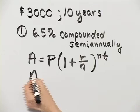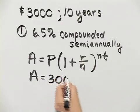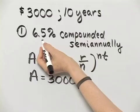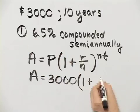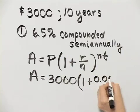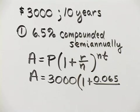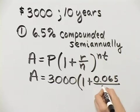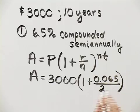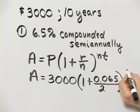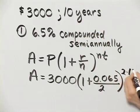A is what we're looking for. We have a principal of 3,000, and then it's one plus this interest rate as a decimal — move the decimal point two places to the left — over N. Now what is N if compounded semi-annually? N is the number of compoundings per year. So if compounded semi-annually, that's twice a year, N is two. And then N times T is two times 10.